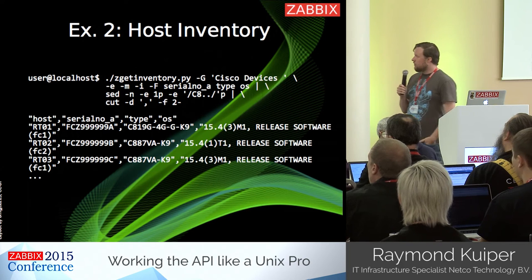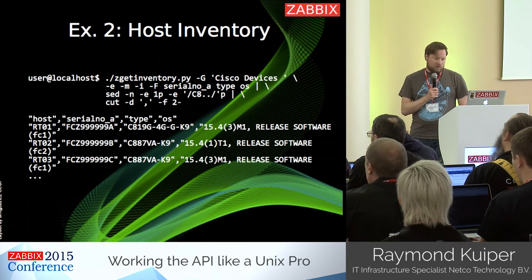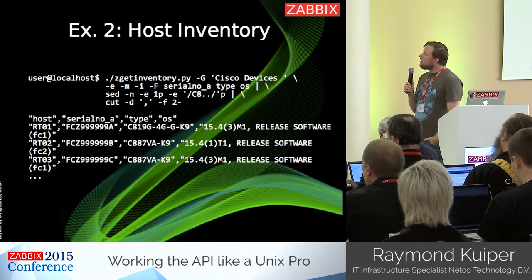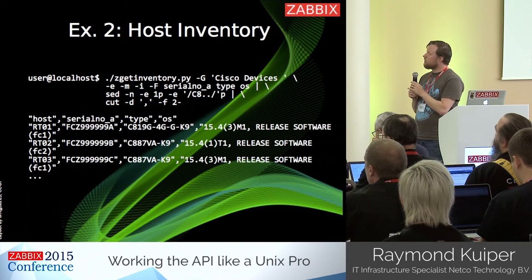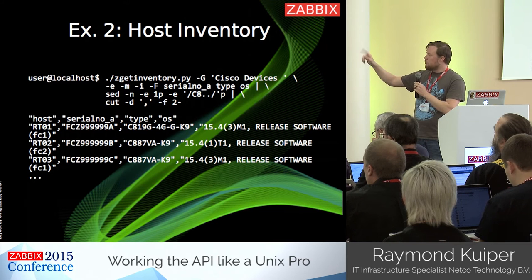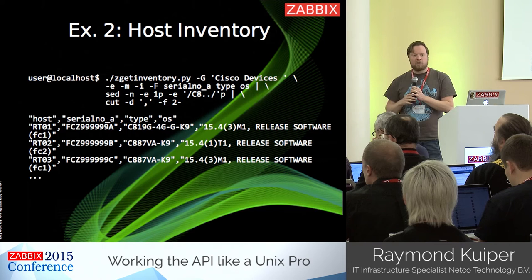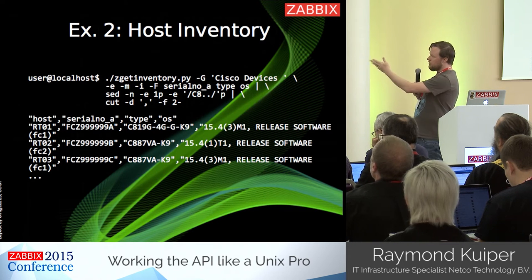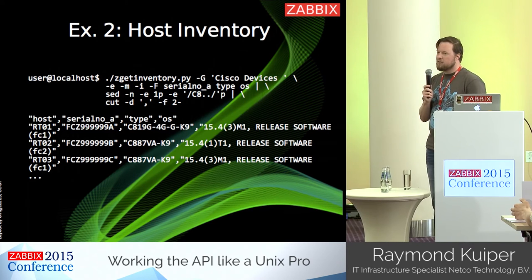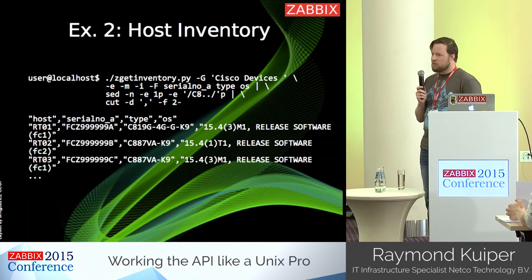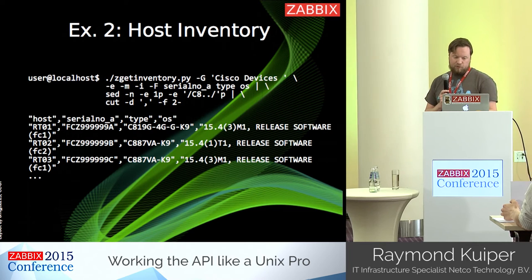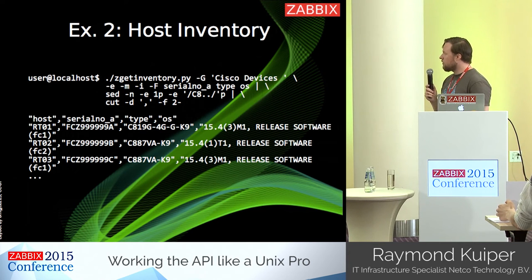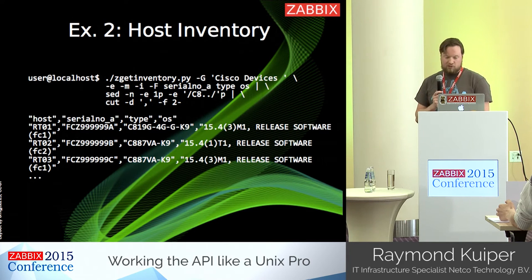Then there's the zbx_get_inventory gnome. You specify a host group and the fields you're interested in, and it generates a CSV output. You run it against the Cisco devices group, then use sed and cut to filter for Cisco 800 series — the type field contains something matching 'C8' plus two characters. Sed also prints the header line, and cut filters out the host ID from the default output. You end up with a nice comma-separated list of host, serial number, exact type, and software version — ready to send to your boss.